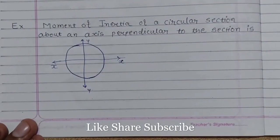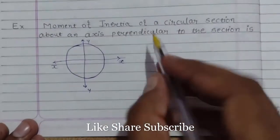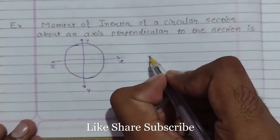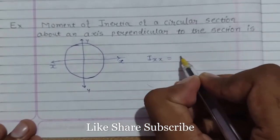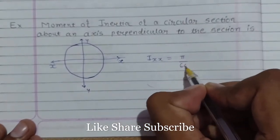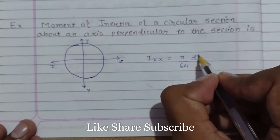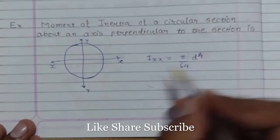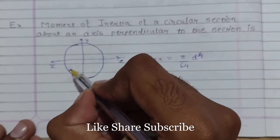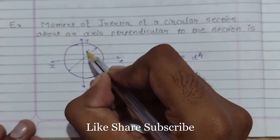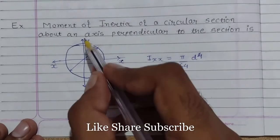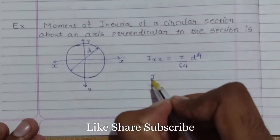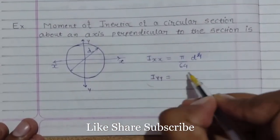So the general equation for finding the moment of inertia about axis Ixx for a thin disk is Ixx equals π/64 × d⁴, where d is the diameter of the disk. Similarly, if we want to find the moment of inertia about axis y-y, then Iyy equals π/64 × d⁴.